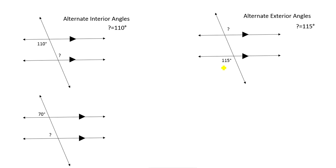Next, we have 2 angles that are at the same position along the transversal and at the same location at each intersection, so these angles are corresponding angles. Recall that corresponding angles are equal. So if this angle is 70 degrees, then the question mark will also be 70 degrees.